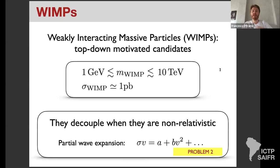Let's begin with the definition of a cold relic. Cold relics decouple when they are non-relativistic, so T_fo ≪ m. In the annihilation rate, the thermally averaged cross-section ⟨σv⟩ can be expanded in a partial wave expansion.